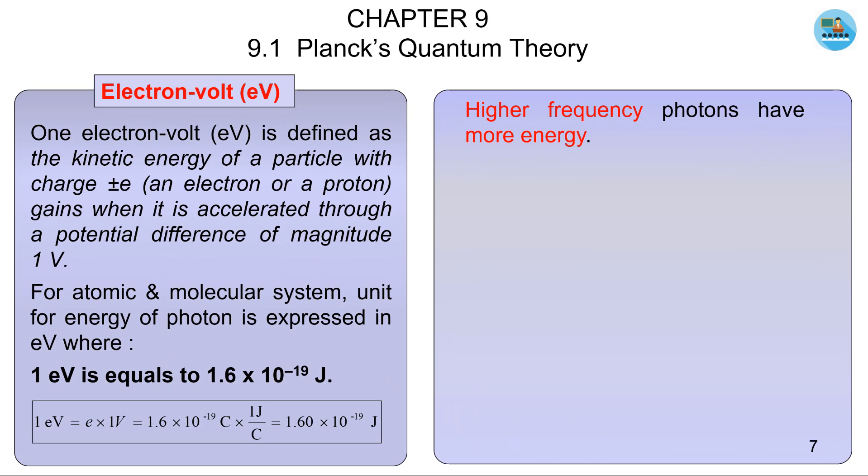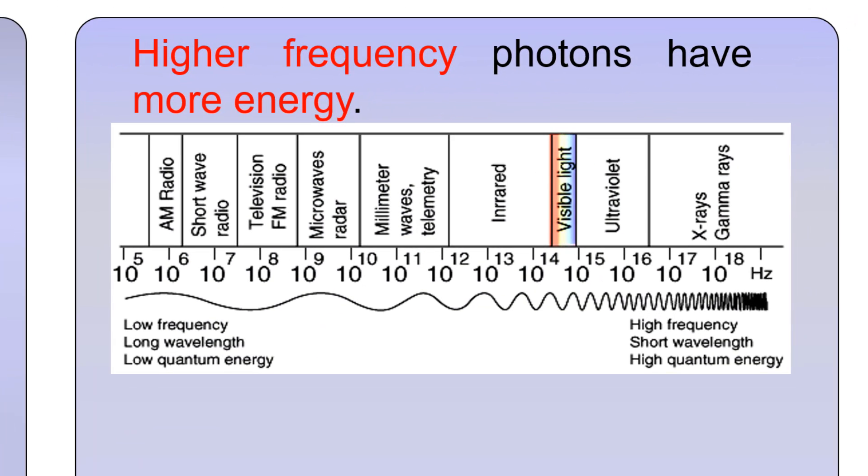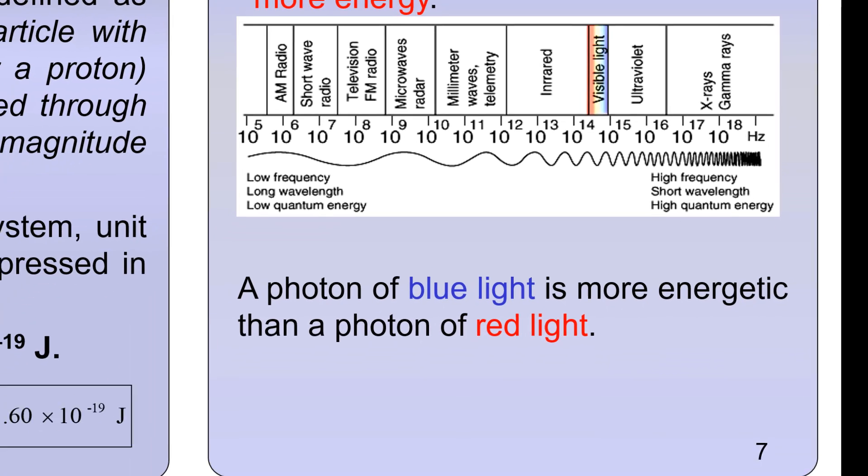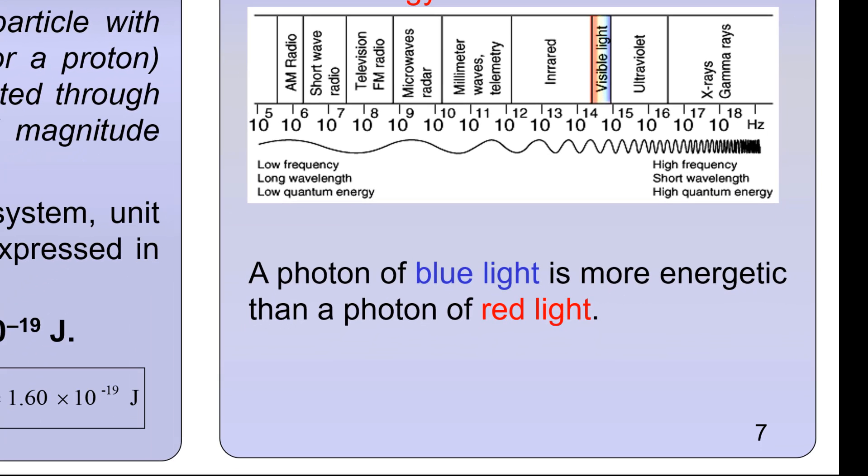Higher frequency photons have more energy. And by looking at this electromagnetic spectrum, we can see that the higher the frequency, the more energy the photon carries. A photon of blue light has more energy than that of red. Why? It's because blue has higher frequency than red.